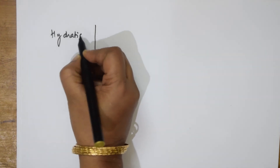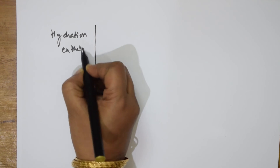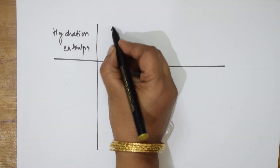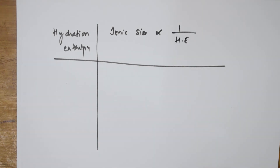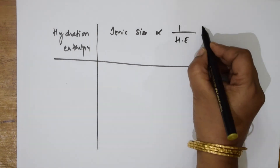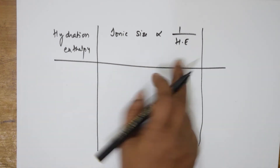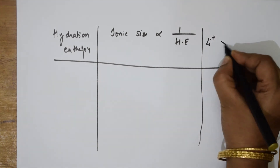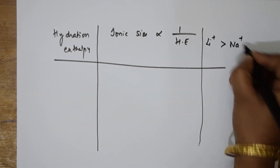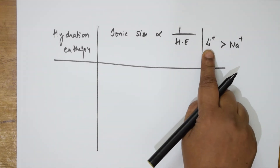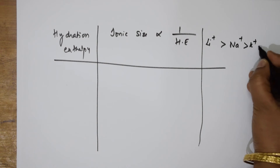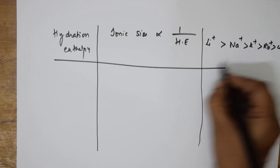The next property is hydration enthalpy. Ionic size is inversely related to hydration enthalpy. So for lithium⁺, which has a smaller size, hydration enthalpy is the highest. For larger ions, hydration enthalpy is lesser. The order of hydration enthalpy is: lithium > sodium > potassium > rubidium > cesium.